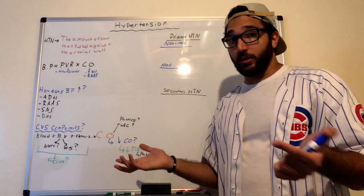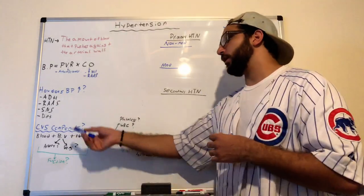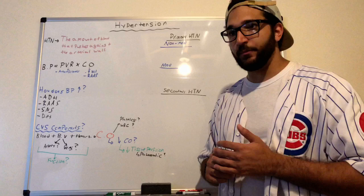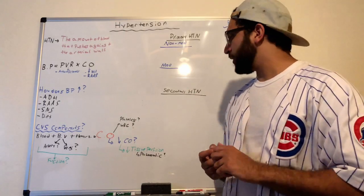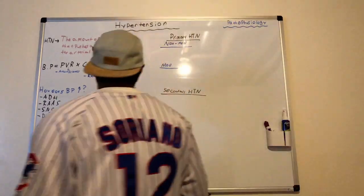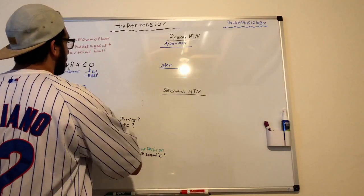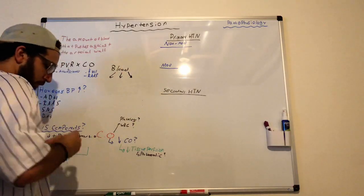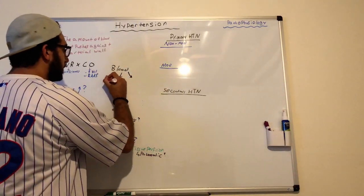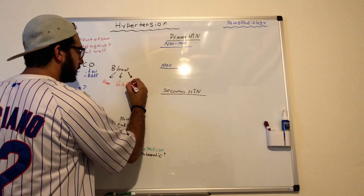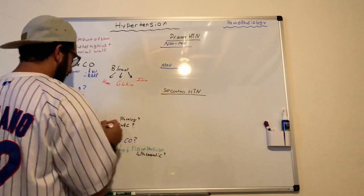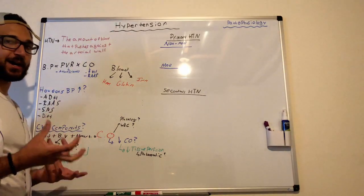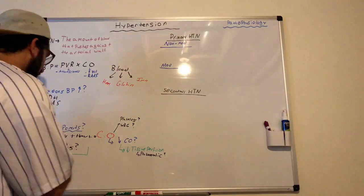There are some important components of the cardiovascular system worth noting. First is blood — its function is to carry oxygen. Blood is broken down into three components: heme, globin, and iron. The importance of blood is that it carries oxygen in order to perfuse the rest of your body.